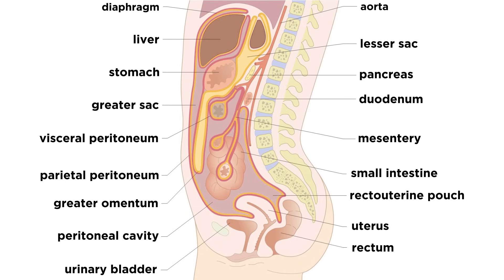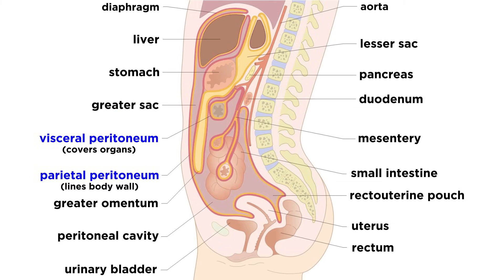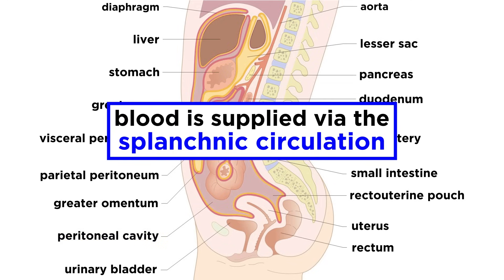Let's start out by taking a closer look at some of the organs of this system. Most of these sit in the abdominopelvic cavity. The peritoneum is the membrane of this cavity, and it is divided into the visceral peritoneum, covering the surfaces of these organs, and the parietal peritoneum, lining the body wall with the peritoneal cavity in between, containing a serous fluid that lubricates the organs for ease of mobility. Blood is supplied to these organs via the splanchnic circulation.